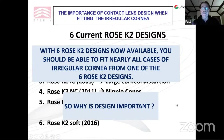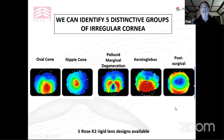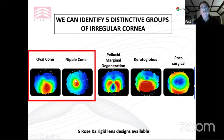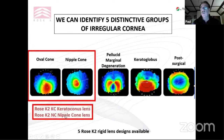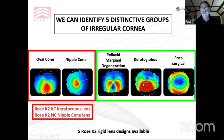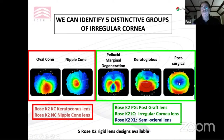Why is design important? We tend to talk about five different types of irregular cornea: the oval cone, the nipple cone, pellucid, globus, and any post-surgical condition. For smaller areas of distortion — particularly the nipple cone but even the oval cone — you can often get away with fitting smaller lenses like the keratoconus or nipple cone lens. But for larger areas of distortion, it's very difficult to get success with smaller lens designs, and you have to go to bigger corneal lens designs with bigger diameters, or to a semi-scleral or scleral lens.